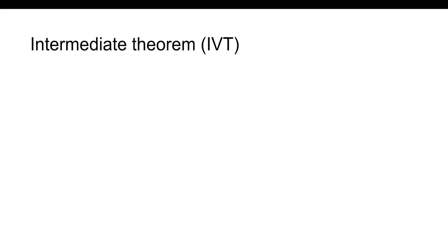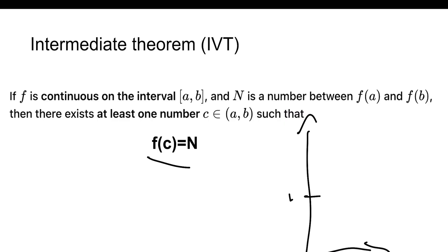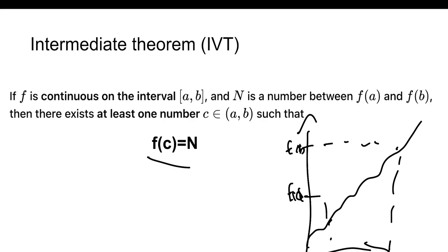You also need to know the theorems, which usually pop up in FRQs. The first is the Intermediate Value Theorem: if f is continuous on the closed interval [a, b] and n is any number between f(a) and f(b), then there exists at least one number c in the open interval (a, b) such that f(c) = n. Continuity is required on the closed interval, and the conclusion holds for c in the open interval.